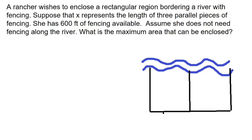We've got very similar situations here. It says a rancher wishes to enclose a rectangular region bordering a river with fencing. Suppose that x represents the length of three parallel pieces of fence, and she has 600 feet of fencing available. Assume she doesn't need fencing along the river. What's the maximum area that we can enclose? This is very similar to the last problem.